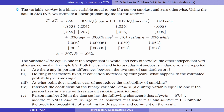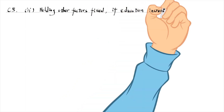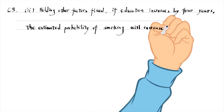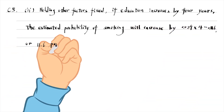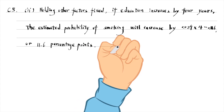Problem five is about the linear probability model. For the first question, there's no important difference between the two sets of standard errors — they are close to each other. For part two, holding other factors fixed, if education increases by four years, the estimated probability of smoking will increase by 0.029 times 4 equals 0.116, or 11.6 percentage points.